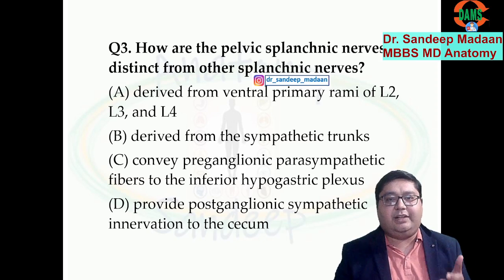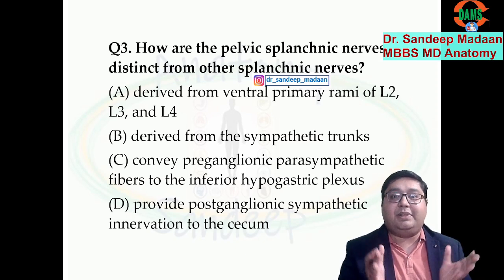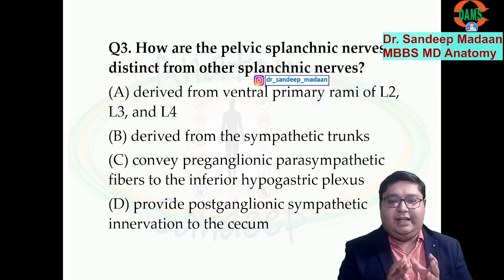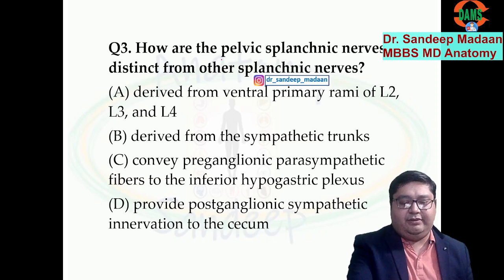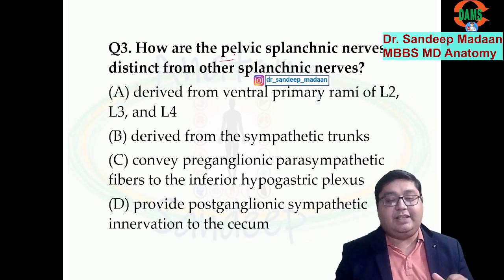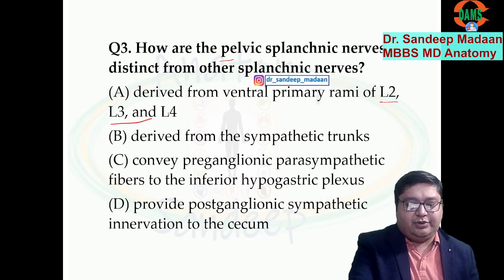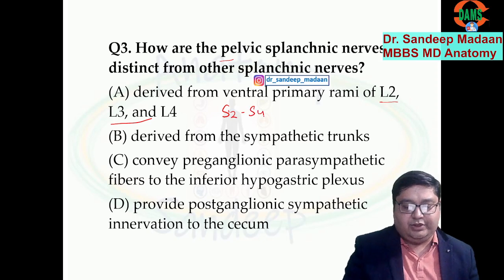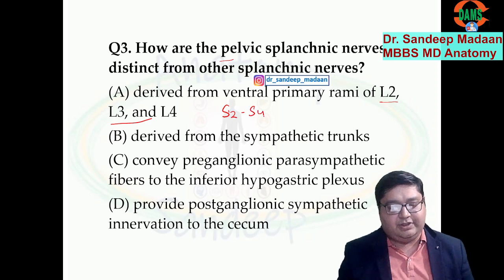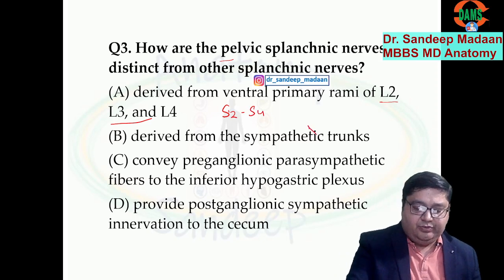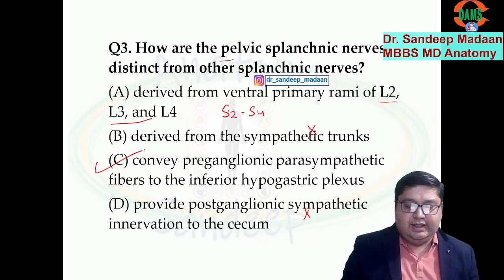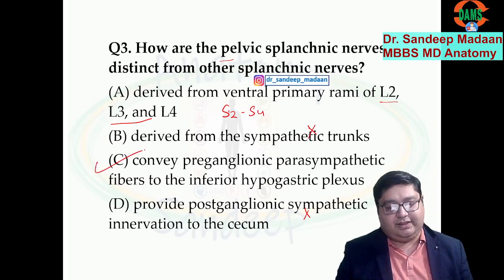Now, regarding pelvic splanchnic nerves — 'splanchnic' means visceral. Usually splanchnic refers to greater, lesser, and least, which are sympathetic. To make it easy: P for pelvic, P for parasympathetic. These are parasympathetic nerves, not from L2, L3, L4 — rather from S2, S3, and S4. The range is S2 to S4, and they have nothing to do with sympathetic. The answer is C — they convey parasympathetic fibers.